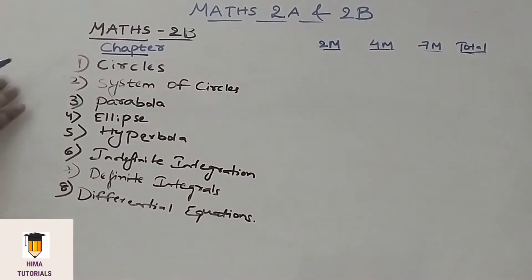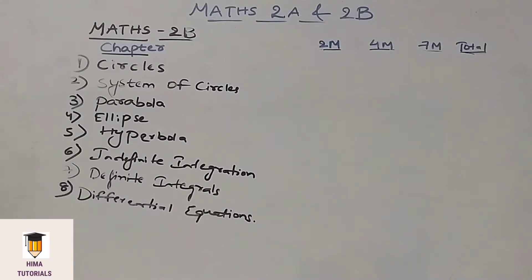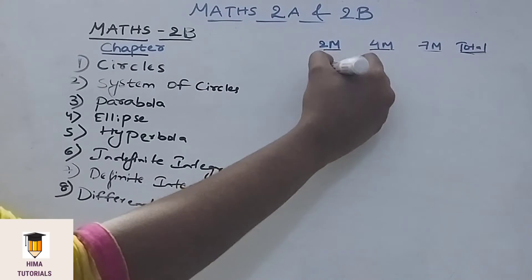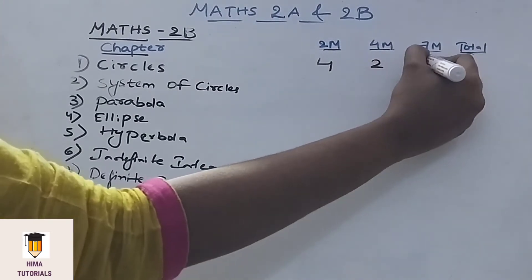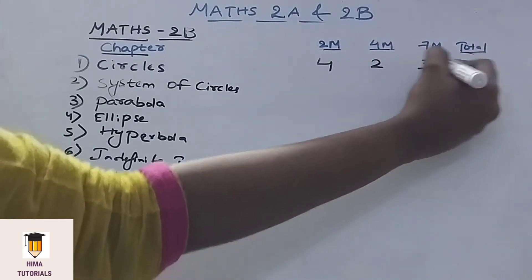Now let's discuss about the Weightage of Maths 2B. In Maths 2B, there are a total of 8 chapters. Now we will see how many 2 marks, 4 marks, and 7 marks questions come in these chapters. Coming to the 1st chapter, Circles — in Circles, we get 4 two-mark questions, 2 four-mark, and 3 seven-mark questions.